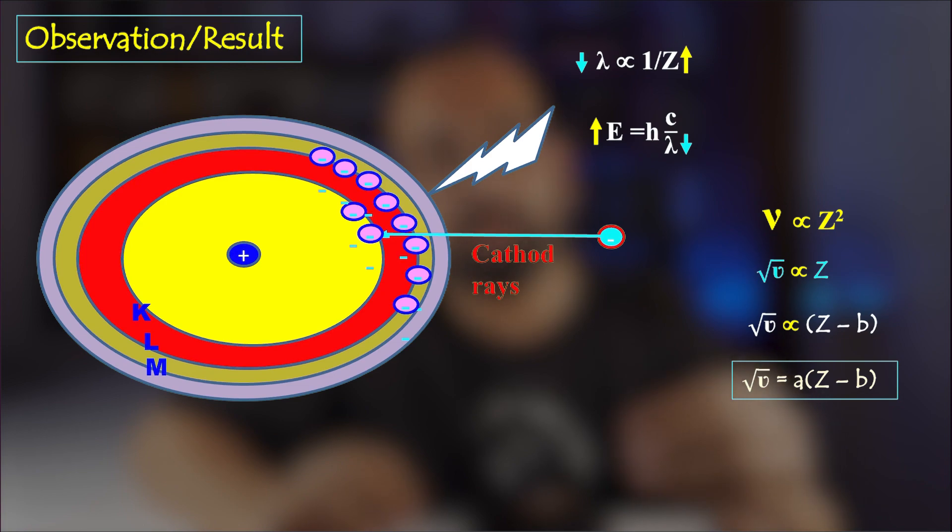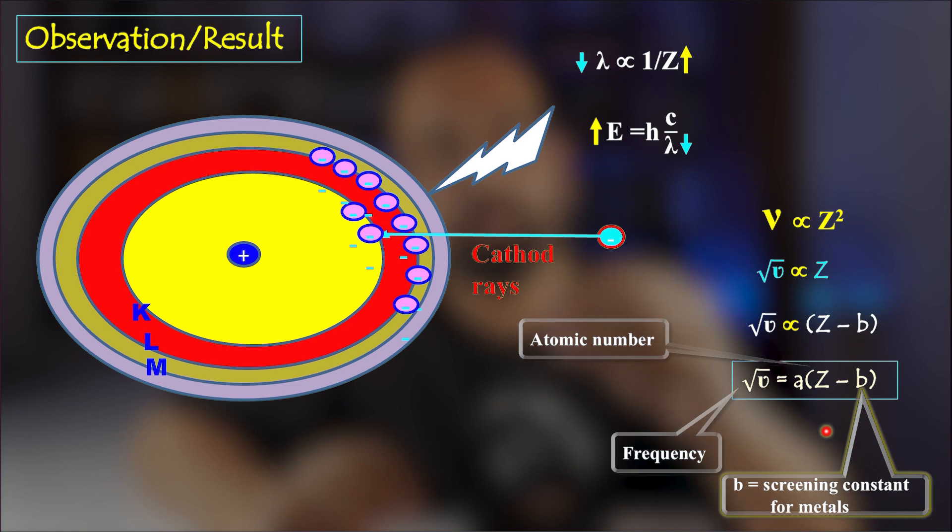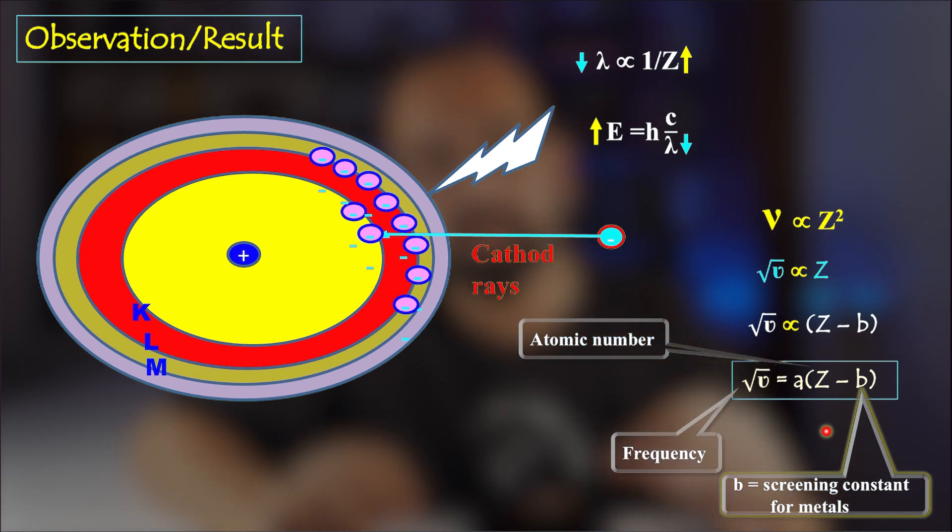Finally, he concluded nu is directly proportional to Z square or root nu is equal to A into Z minus B, where A is proportionality constant and B is screening constant for metals.